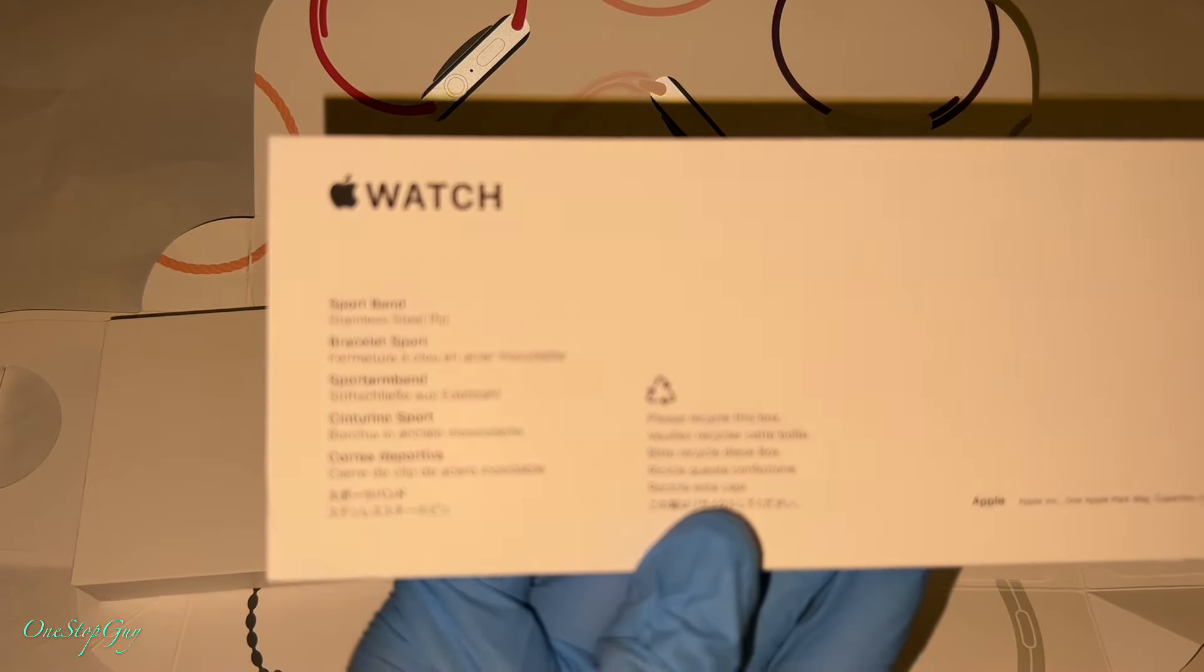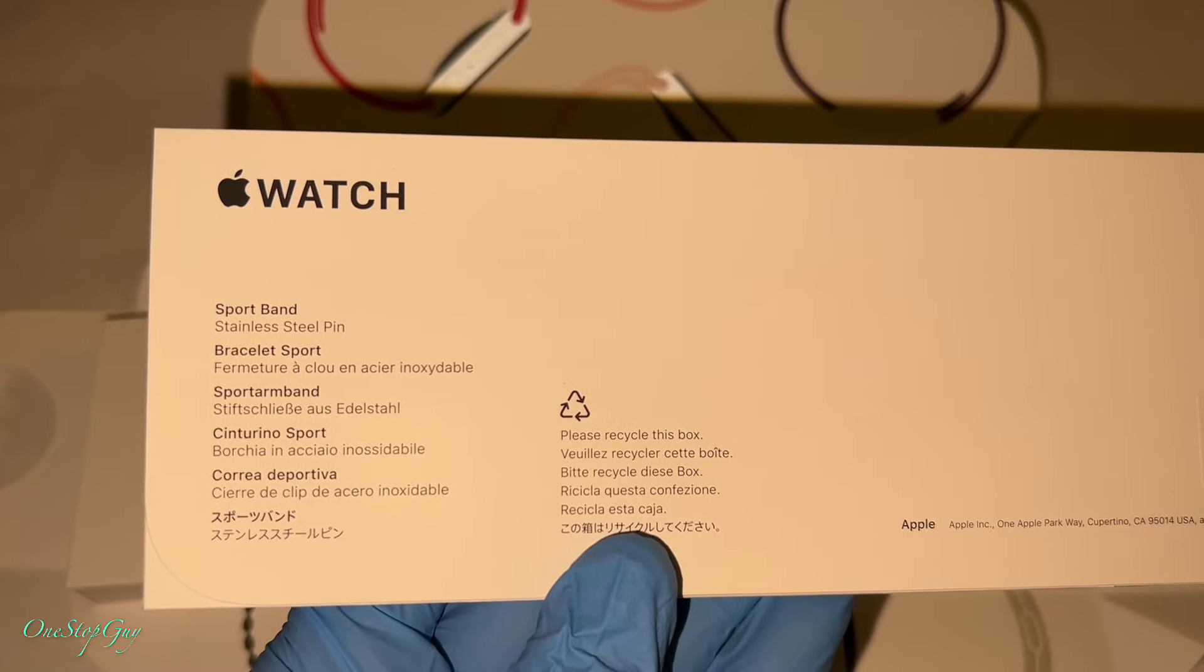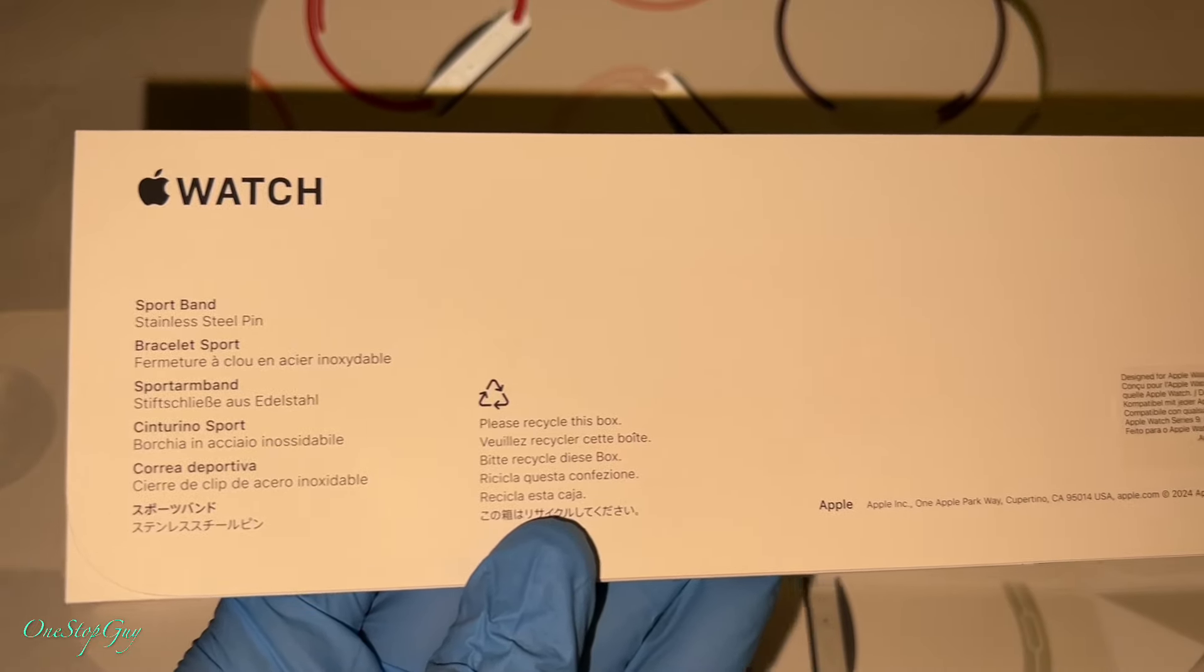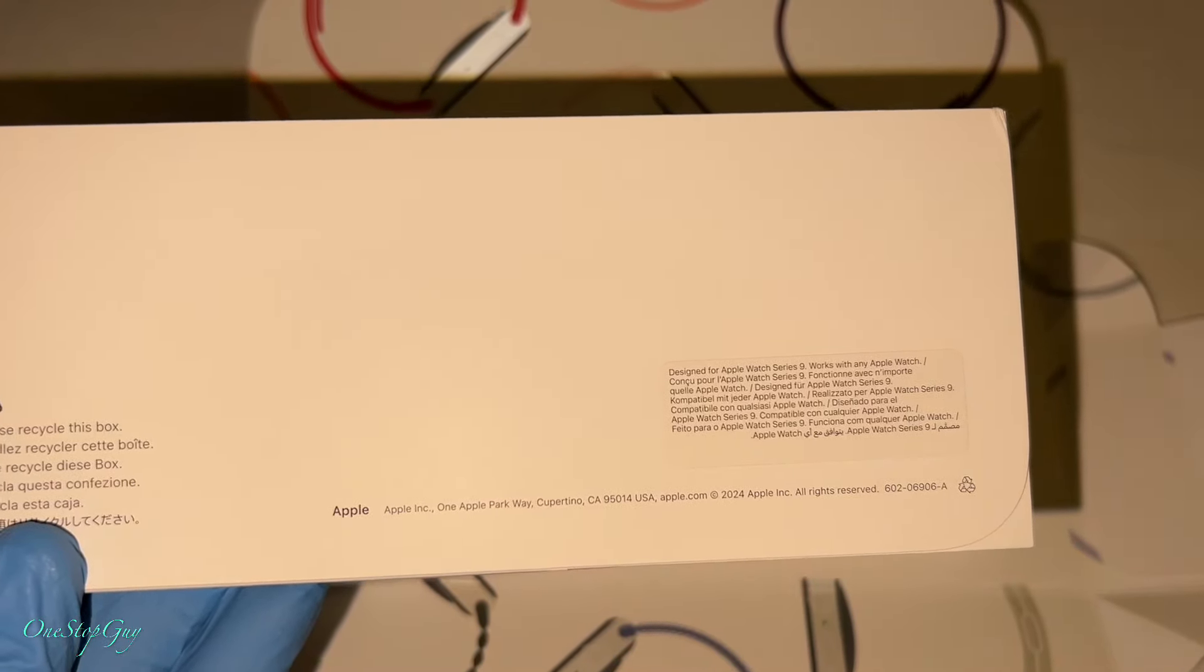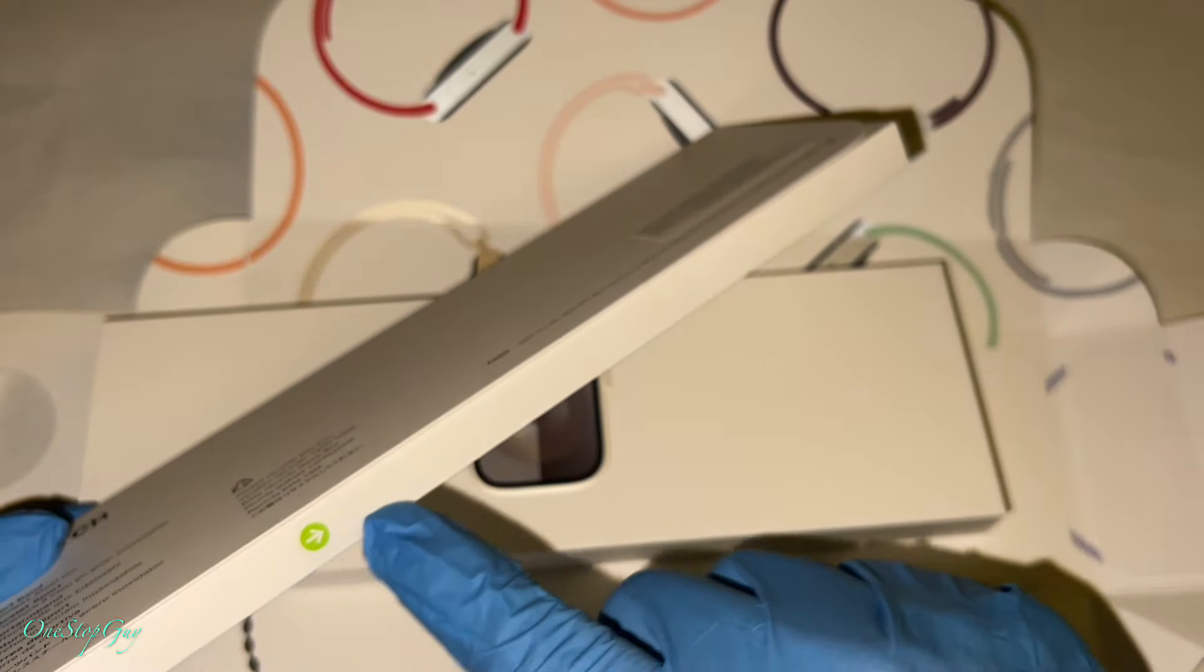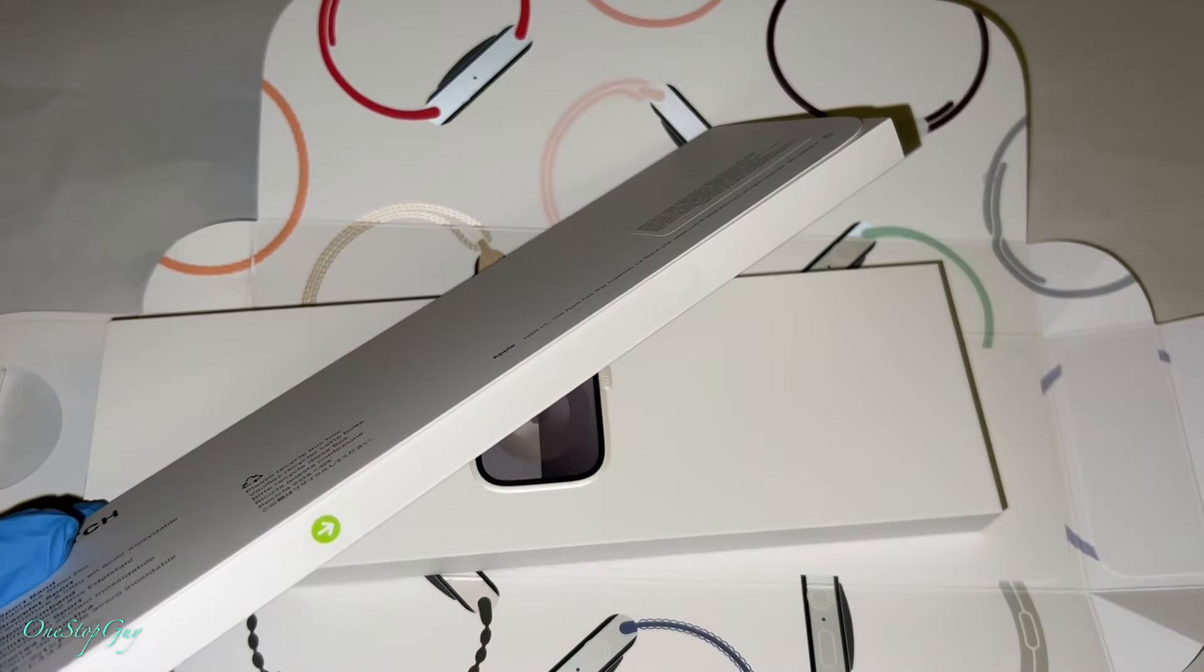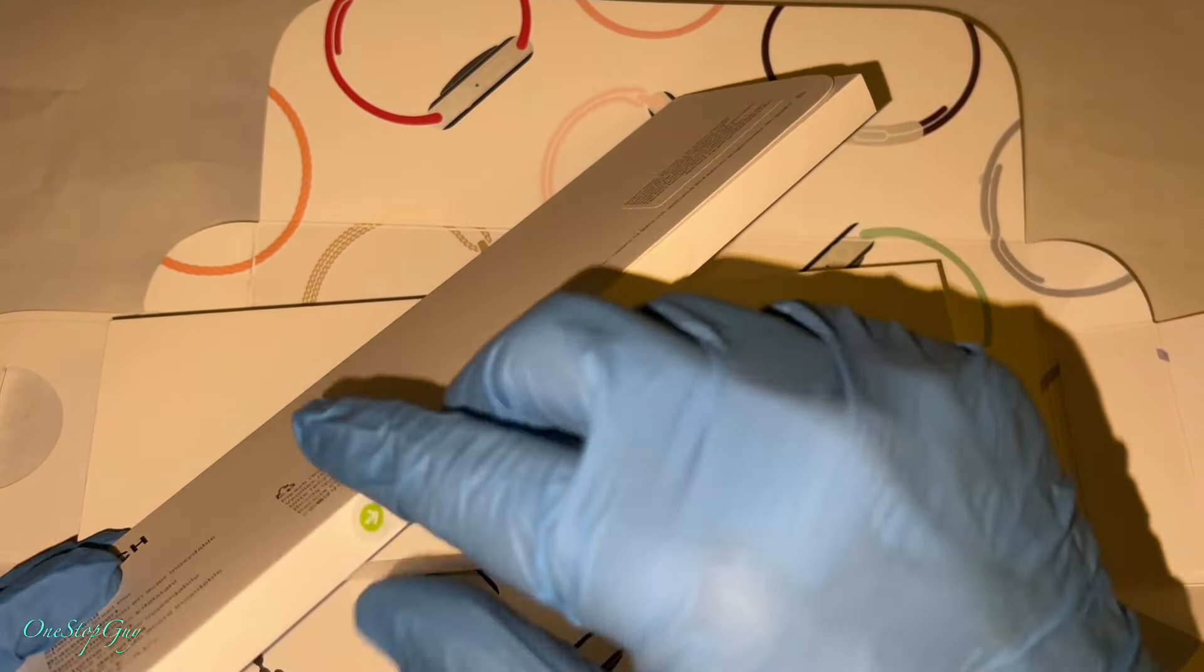In the back of the box here, it's a sport band standard steel pin. They got all the information right there. This one also has an arrow over here for easy package opening. So let's pull it up and let's open it out. All you gotta do is just slide it out, and it opens right up.